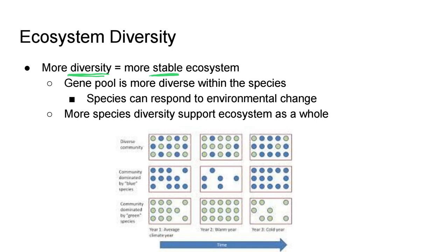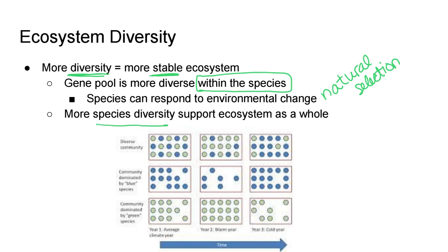We can increase stability both by increasing the diversity within the species in the ecosystem, which allows those species to respond to environmental changes and allows natural selection to occur. Also, more species diversity — a wider range of species within the ecosystem — will help support that ecosystem as a whole. You can calculate that with the Simpson's Diversity Index.